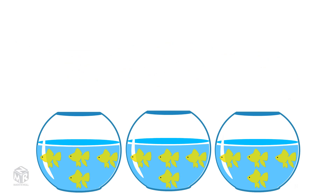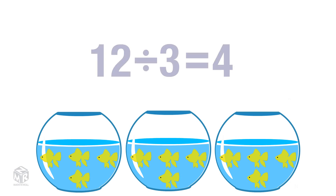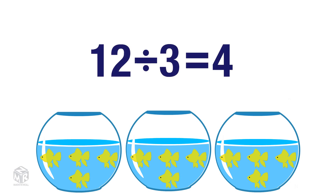Can you guess what we just did? We just used division. We divided our 12 fish into three groups. Now we have four fish in each group. Division is breaking up a number into equal parts or groups.